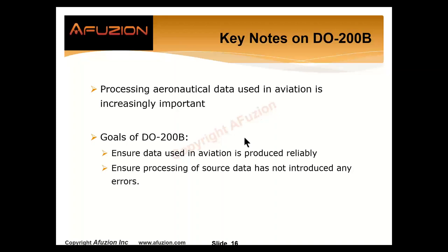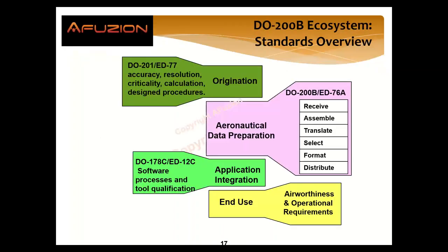We have to ensure that the source data is still intact after we've received, changed, processed, filtered, added to, or subtracted from it. Have we introduced any errors? Can we recreate the exact same data? Can I notify the originator of any errors and notify the receiver along the chain if I make changes or find errors?